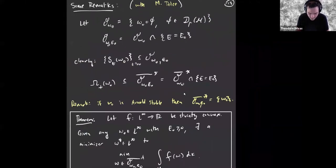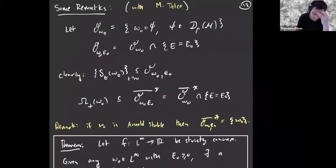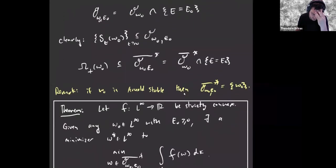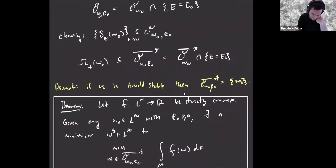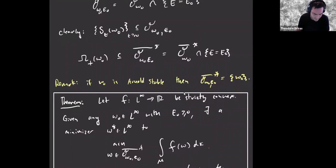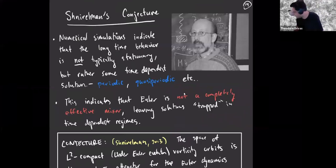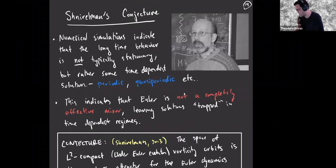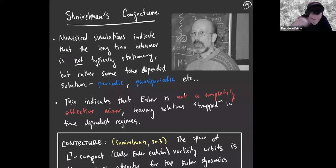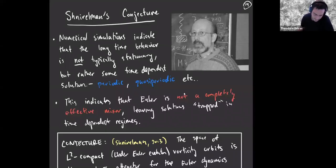There is, with Michaela Dolce, a reinterpretation of some of what Shnirelman does as a variational problem, but I have to skip that. Unfortunately, as we saw in the simulations, it doesn't appear that long-time limits are stationary, at least in the case of the torus. Shnirelman mentions in a later work that things tend to not become stationary but rather time-dependent, periodic, quasi-periodic, perhaps even chaotic. It's some indication that Euler is really not a completely effective mixer — some solutions can be trapped in these time-dependent regimes.